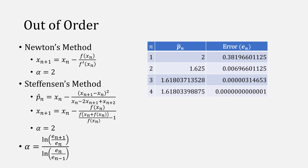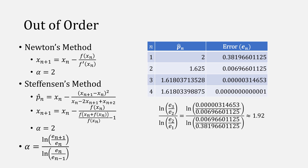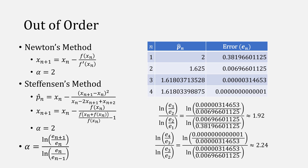If we look at our examples of p-hats that we computed and take a look at the errors — meaning p-hat minus the root — and substitute in our first three errors, the result is an order of about 1.92. If we substitute in our last three errors, we get an order of about 2.24, showing that this is converging relatively quickly.